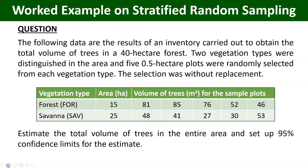Here is the question we want to solve together. The following data are the results of an inventory carried out to obtain the total volume of trees in a 40-hectare forest. The entire forest area is 40 hectares. Two vegetation types were distinguished in the area, meaning the entire area is not homogeneous. We can recognize two vegetation types, and 0.5-hectare plots were randomly selected from each vegetation type. The selection was without replacement.